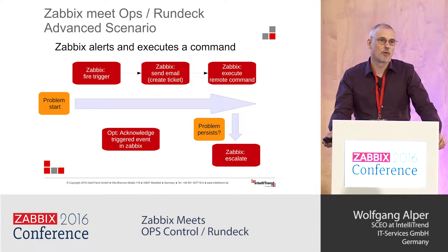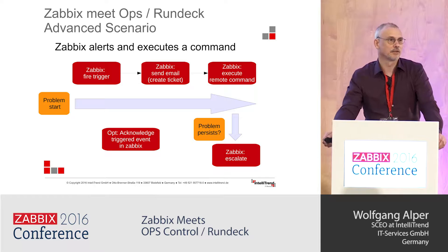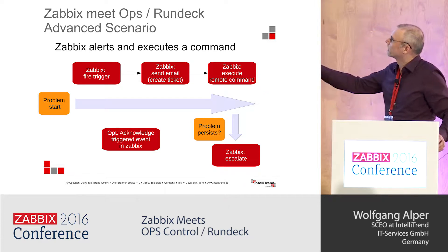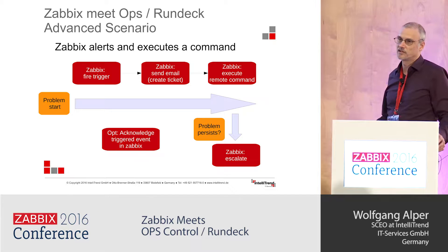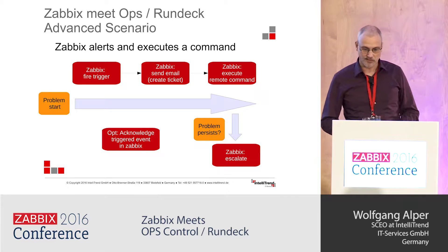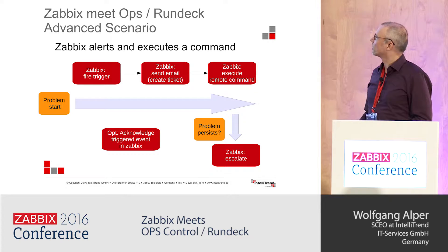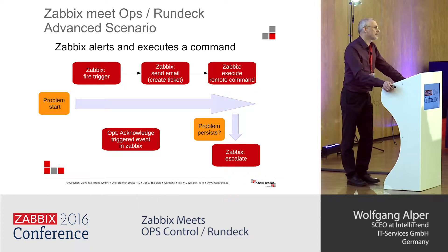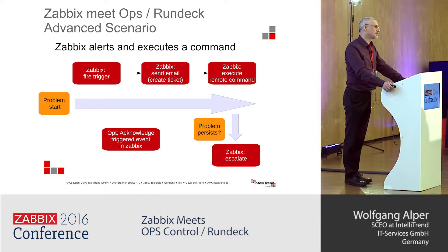So if we want to automate this action, if we would take advantage of Zabbix's ability not only to send a notification but to actually perform something, we can use this advanced scenario. Zabbix fires a trigger, Zabbix sends the email, but on top of that, as part of the escalation process, Zabbix will execute a remote command. If the problem still persists, Zabbix will be able to figure that out on its own and can do an escalation in a very similar manner as our ops team did before.